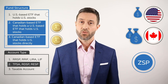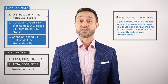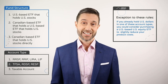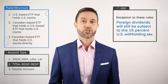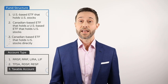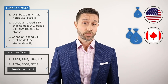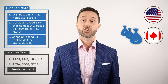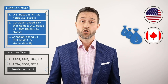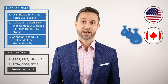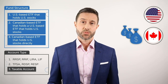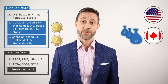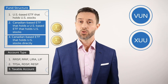ZSP's structure is very similar to that of VUN or XUU from a withholding tax perspective. Moving on to taxable accounts, US withholding tax also applies here no matter which ETF structure you choose. You can generally claim a foreign tax credit to recover the foreign taxes, but you'll still pay Canadian income tax on the full dividend. A slightly lower product cost is the main benefit of holding US-based US equity ETFs like VTI and ITOT, but since it would take many years for these cost savings to offset the currency conversion costs, I'd still recommend holding Canadian-based ETFs like VUN, XUU, or ZSP in your taxable account.